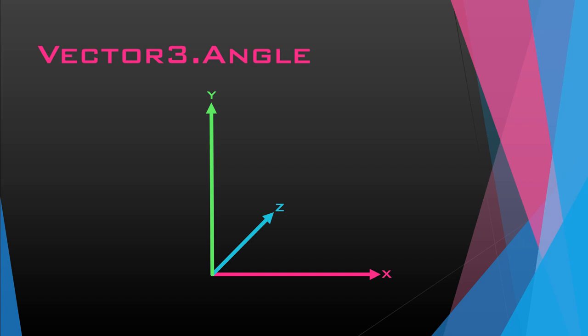The two arguments it takes are 'from' and 'to'. In our case, our 'to' is just going to be transform.up. But this could be transform.right, transform.forward, or some other meaningful transform relative to us. You could use Vector3.up if you're in world space, but remember that transform.up is relative to us — the player — and Vector3.up is relative to the world. So you really want to avoid that, especially if you're working in space where you could be upside down. In my case, I have transform.up.